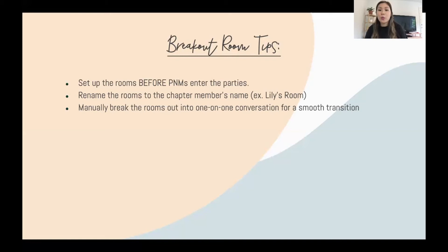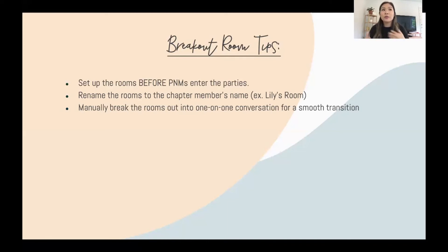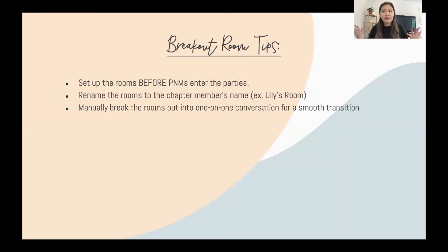I would say manually break out the rooms into the one-on-one conversations so you have a smooth transition. I recommend doing it manually and saying, 'Okay everyone, the group discussion is over — I'm going to break you all out into one-on-one conversations, and then we'll all come back together when time is up.' That way it's not like the group discussion is going and then automatically they're suddenly talking to one person, which would feel very abrupt and confusing.